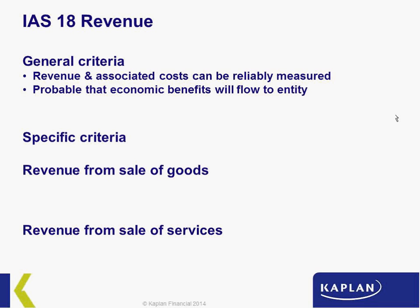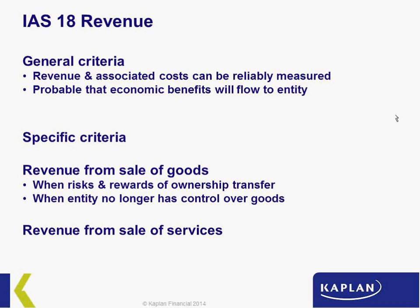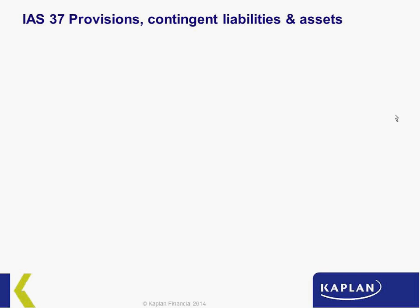IAS 18 has more specific criteria depending on whether revenue is from goods or services. Revenue from the sale of goods is recognised when risks and rewards of ownership transfer and the customer takes control of those goods — at that point we de-recognise the asset and recognise revenue. Revenue from the sale of services is recognised by reference to stage of completion — as you complete and provide the service, you may recognise revenue proportionally.